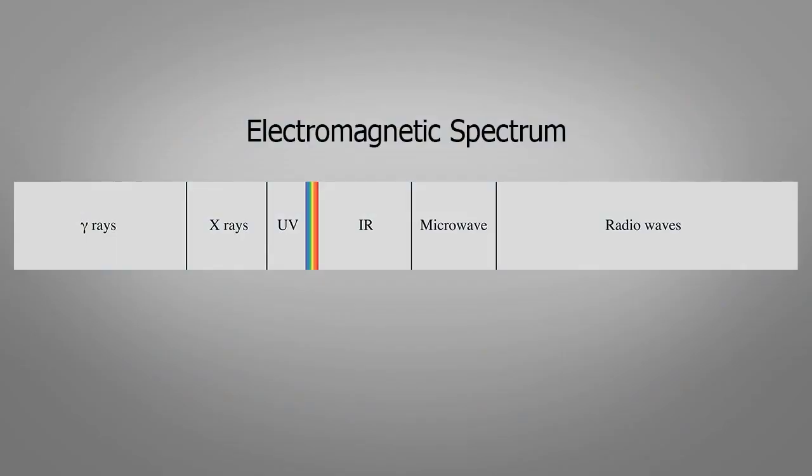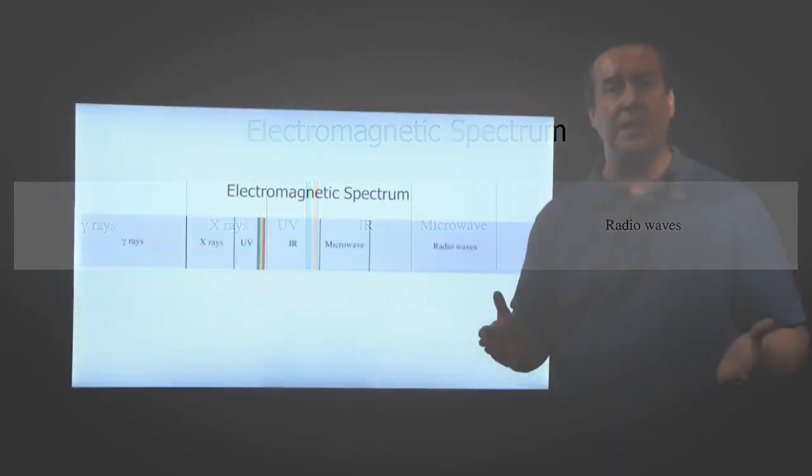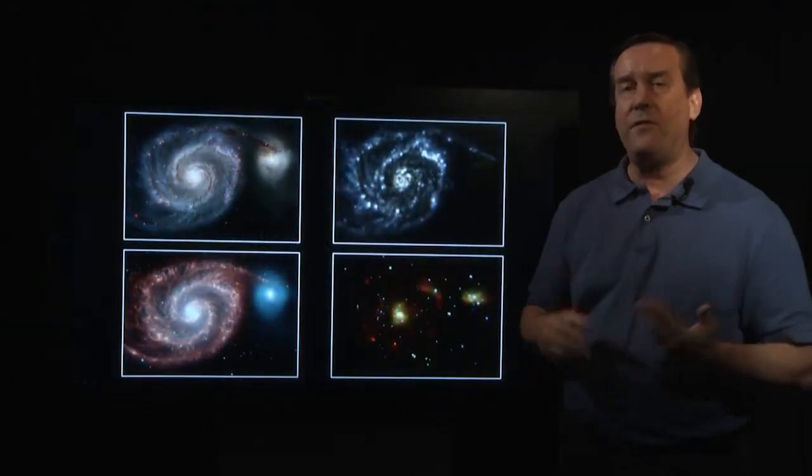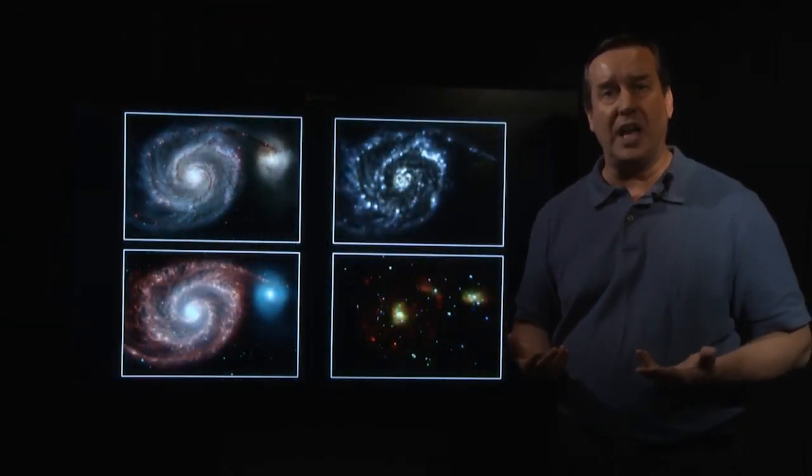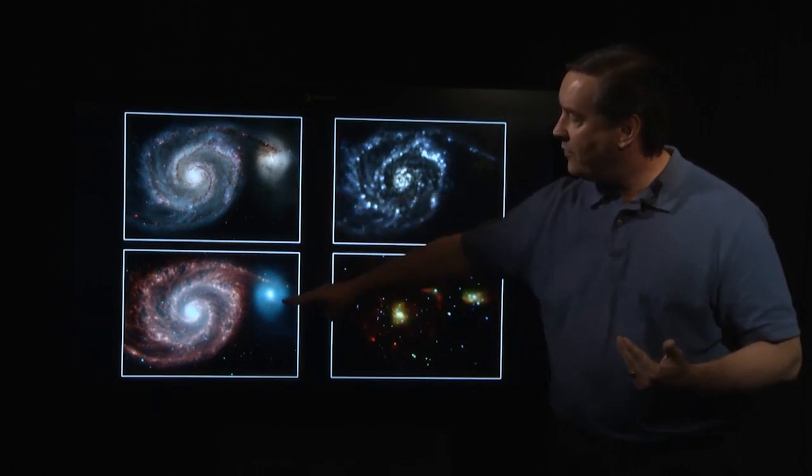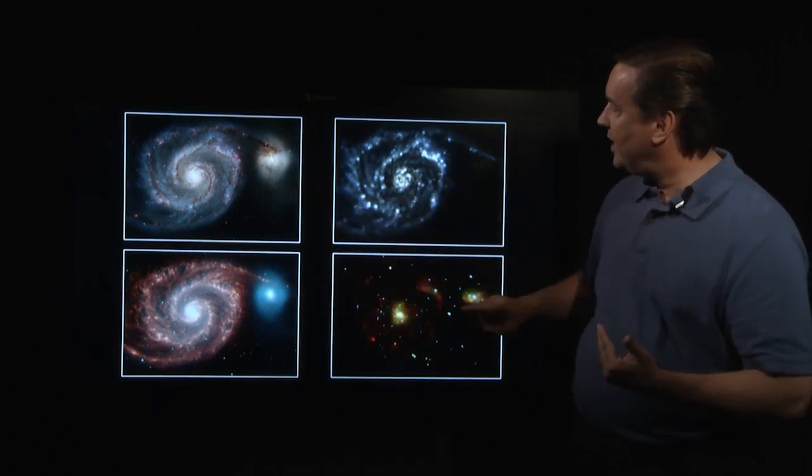Naturally, astronomers want to use as many types of light in examining the universe. Here we have four images of the Whirlpool galaxy in four different types of light: visible, infrared, ultraviolet, and X-rays.